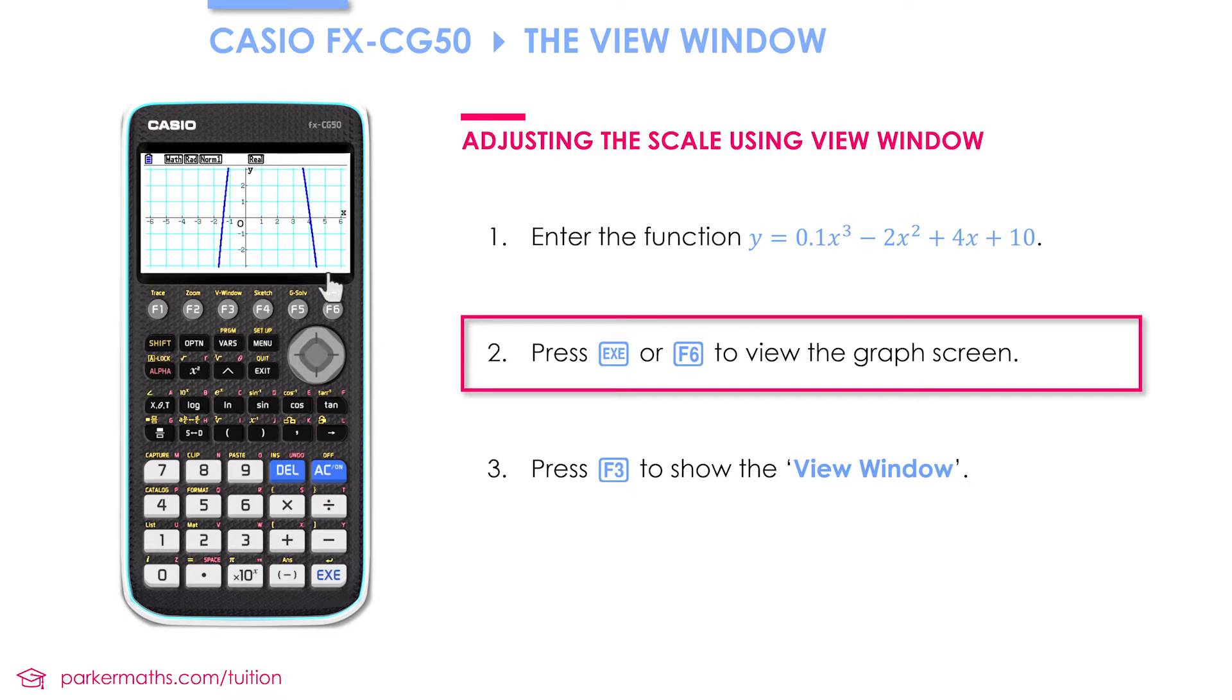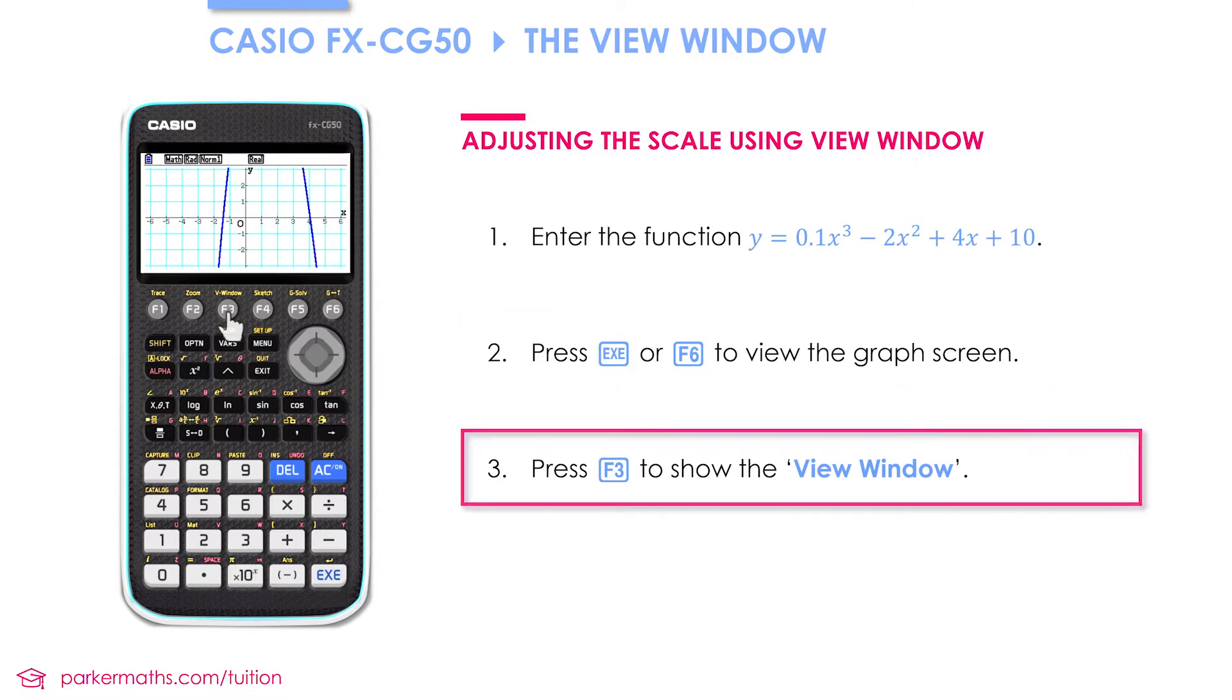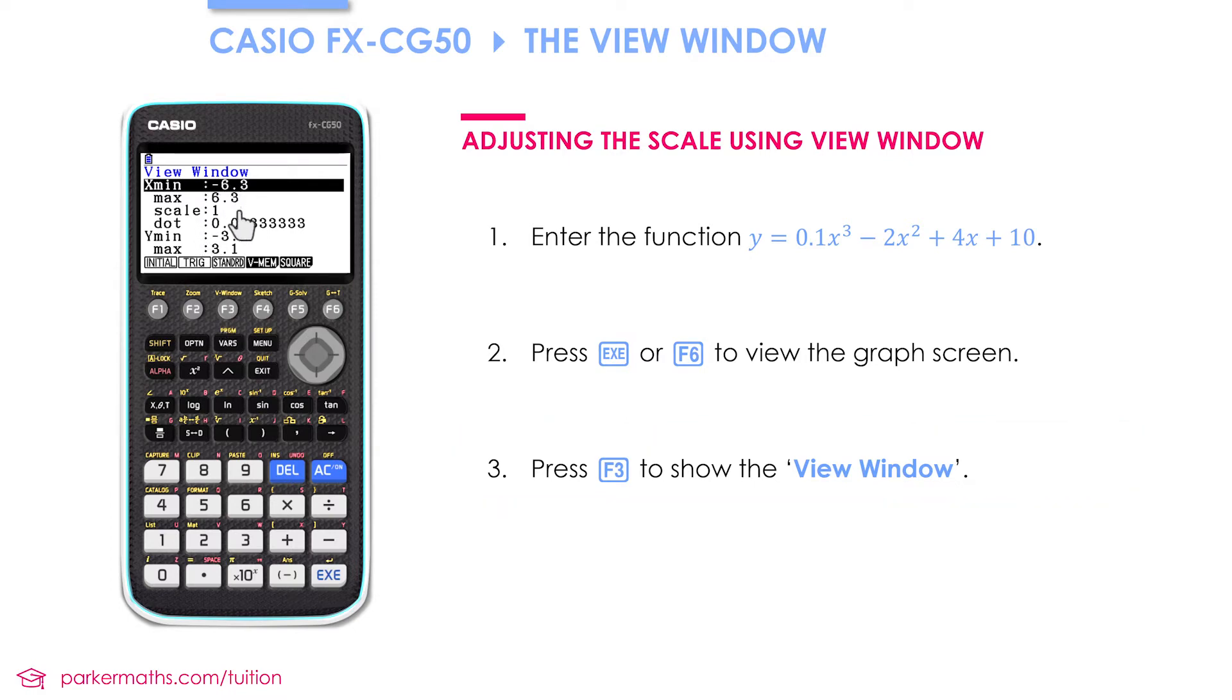So what we're going to do is adjust the scale and the axes so that we can fit more of the graph on the screen. To do that we press F3, which takes us to the view window. In this menu we're able to adjust the minimum and maximum x and y values and also the scale on the axes.